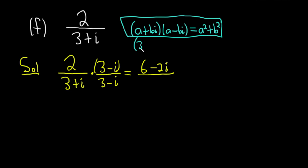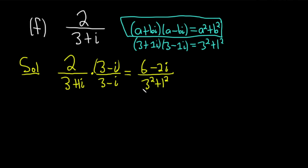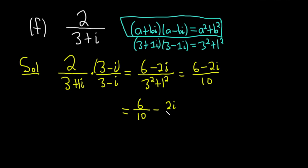In our case, we have (3 plus 1i) times (3 minus 1i), so that's 3 squared plus 1 squared. The denominator becomes 9 plus 1, which is 10. So we have (6 minus 2i) over 10. We can break this up: 6 over 10 minus 2i over 10.